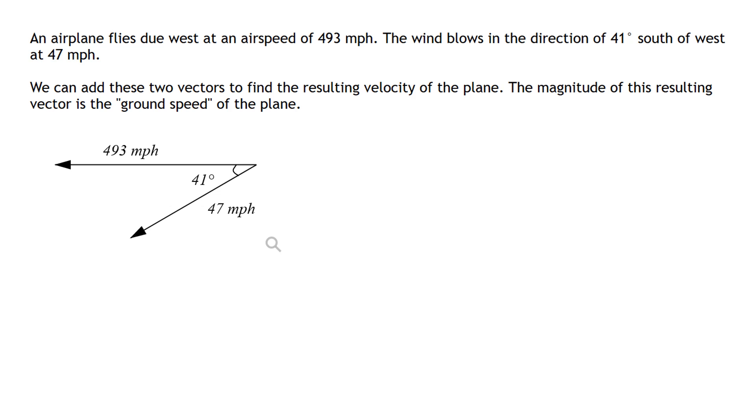The plane velocity is pretty easy to figure out because the plane is flying due west at an airspeed of 493 miles per hour. So this vector is just going to be negative 493 comma zero because it's pointing directly to the left. The x component is negative 493, negative because it's pointing left in the negative x direction, and the y component is zero because it's not pointing up or down in any way.